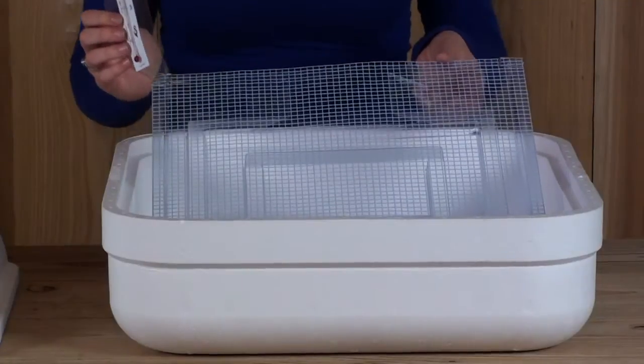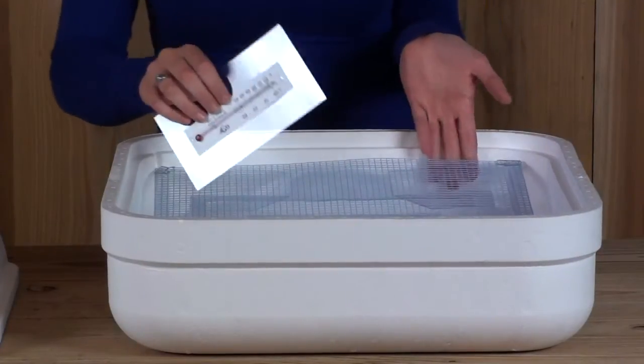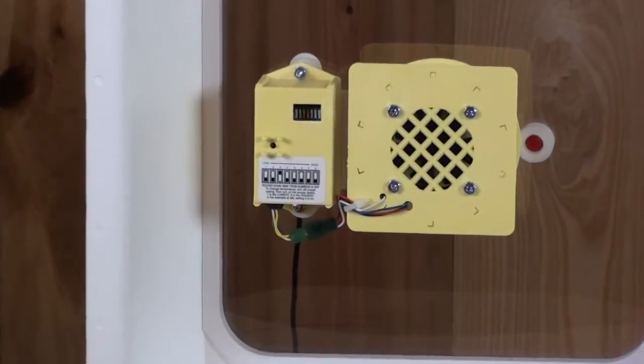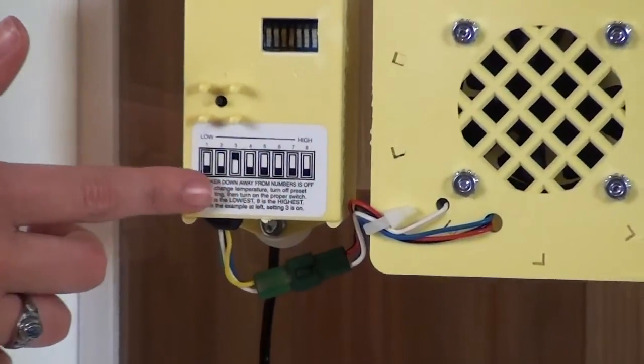Place your eggs on the wire rack and then place your thermometer on top of your eggs. The directions for setting the temperature are located on the inside of the incubator.